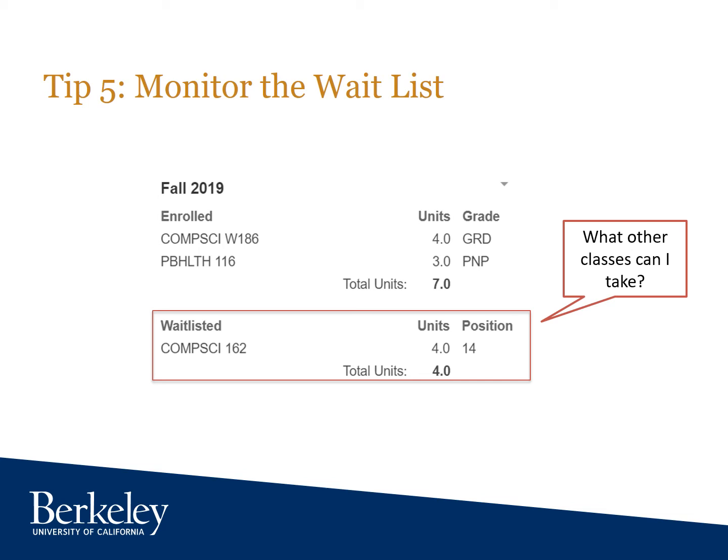If you're on the waitlist and it's phase one or phase two, just be patient. The adjustment period for fall 2019 begins on August 19th. At that point, the reserve seating requirements come down and that's when you'll start to notice movement on the waitlist. So if it's phase two and you're not noticing much change in your waitlist position, be patient and check it again on August 20th.